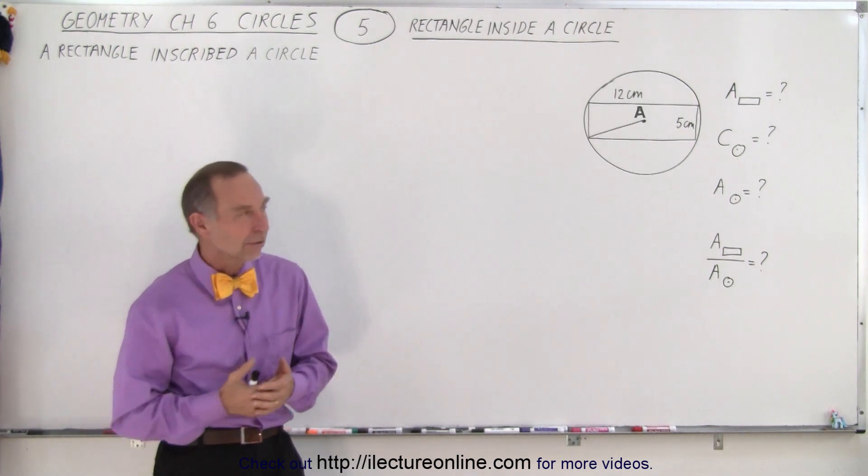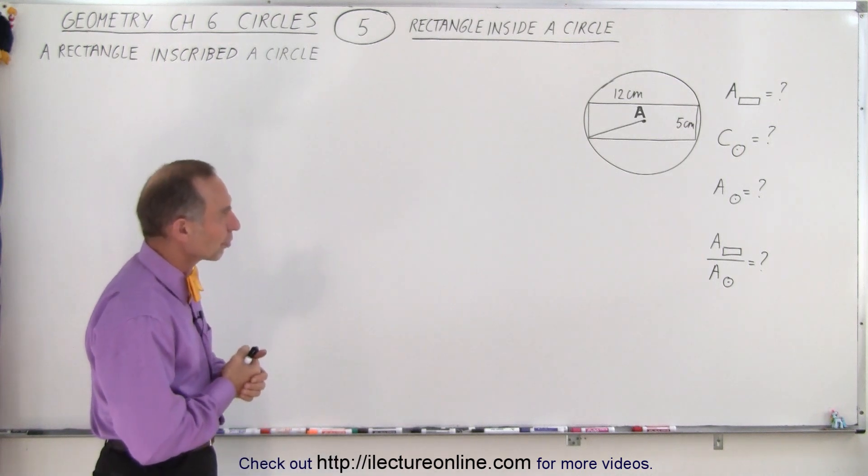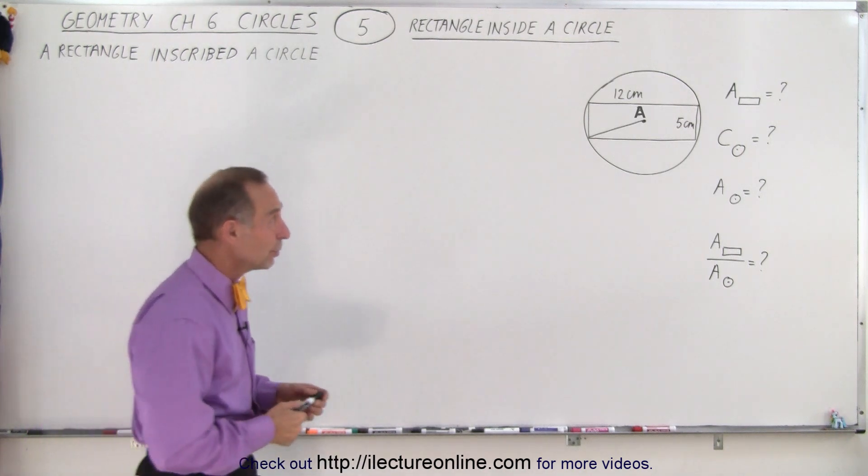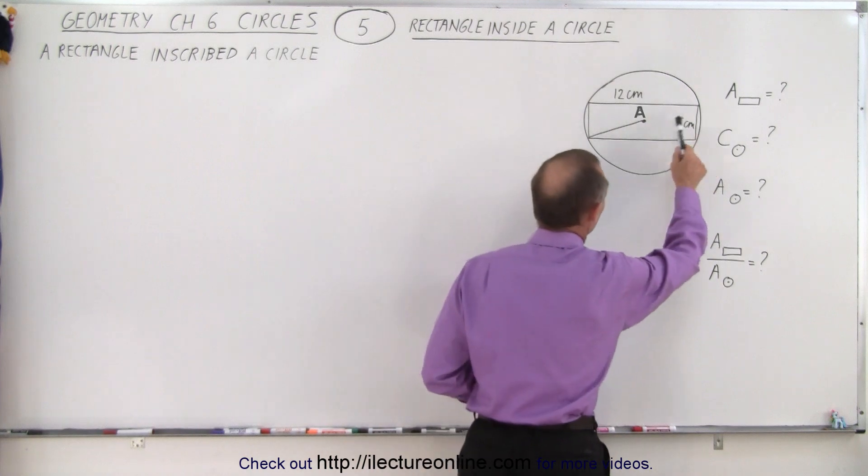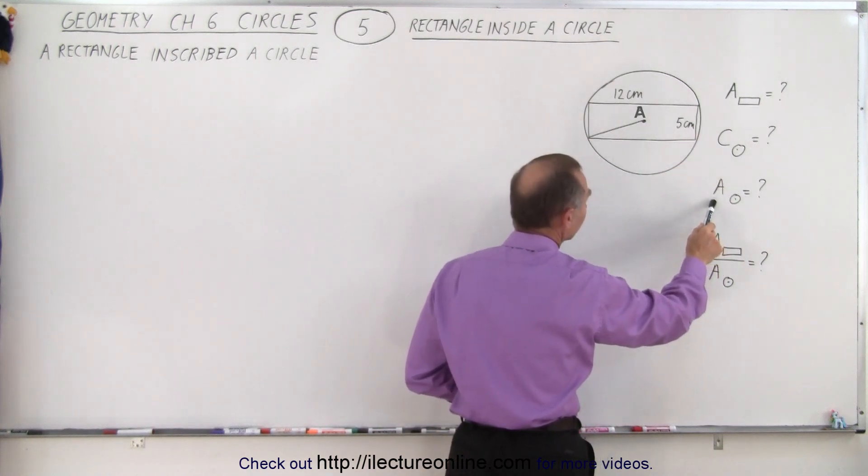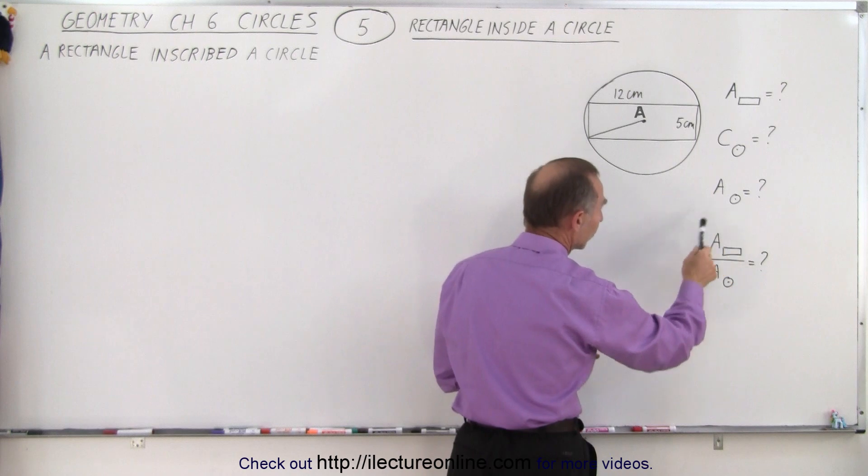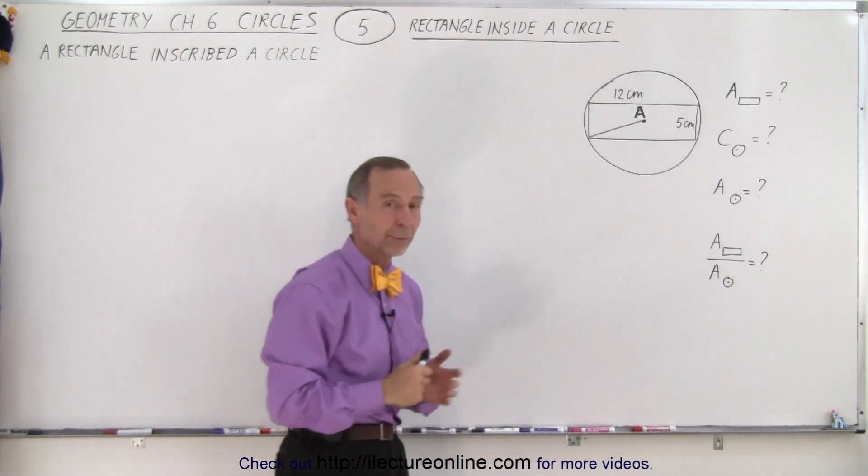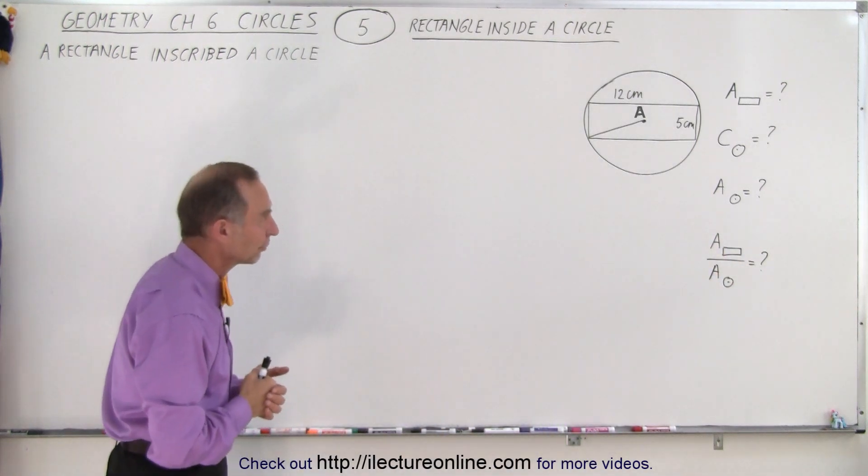You can see the similarity in how you approach solving this problem. What are we trying to do? We're trying to find the area of the rectangle, the circumference of the circle, the area of the circle, the surface area, and then the ratio of the surface area of the rectangle to the surface area of the circle.